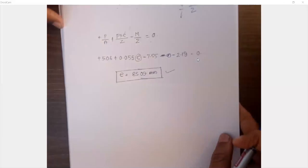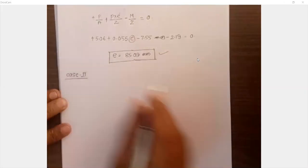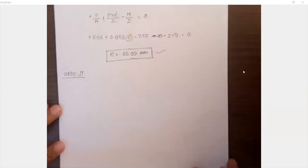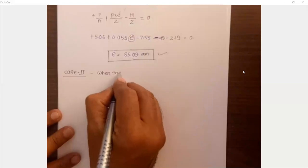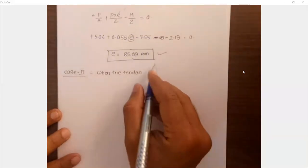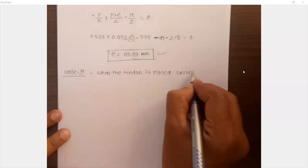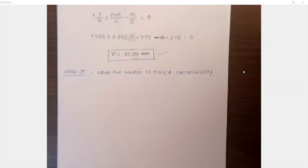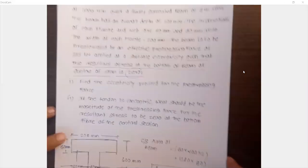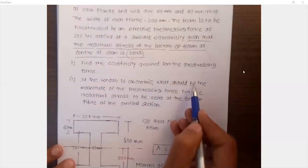Next, case number two. In case number two, when the tendon is placed concentrically — which thing do you have to calculate here? In the problem, if the tendon is concentric, what should be the magnitude of the pre-stressing force?